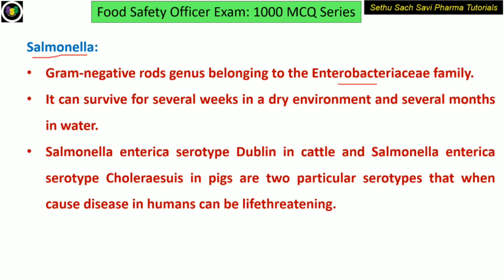It can survive for several weeks in a dry environment and several months in water or aquatic environment. Salmonella enterica, the most common species, can be divided into two serotypes: Dublin in cattle and Choleraesuis in pigs. These two serotypes can cause life-threatening diseases in humans.